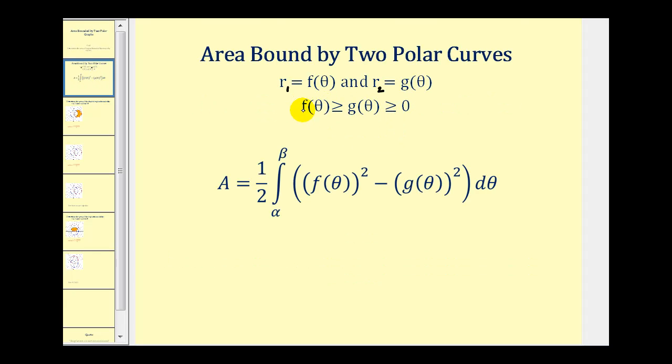So if we have two polar equations where r1 equals f of theta and r2 equals g of theta, and f of theta is always greater than or equal to g of theta, greater than or equal to zero, then the area bounded by these two polar curves is going to be equal to one-half times the definite integral from alpha to beta of f of theta squared minus g of theta squared d theta.